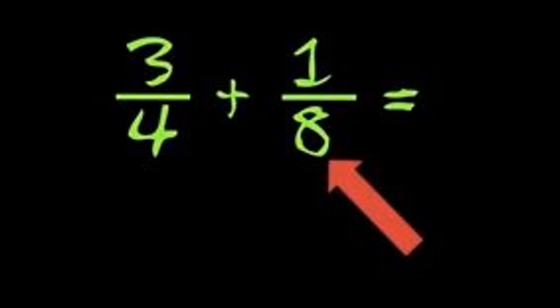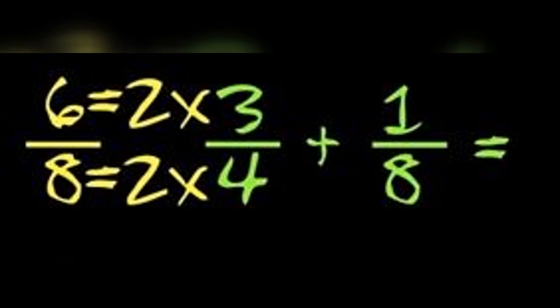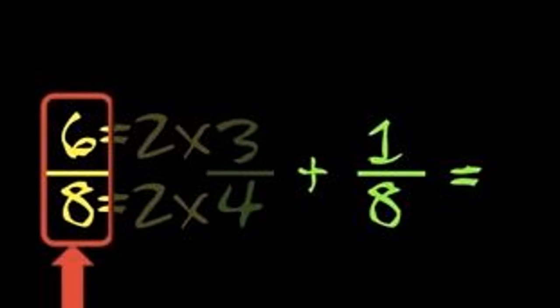One of these already has an eight, gotta change the other one so it looks the same, got an eight on the bottom, gotta multiply by two, gotta do the same thing to the numerator too. Turn three fourths into six eighths.